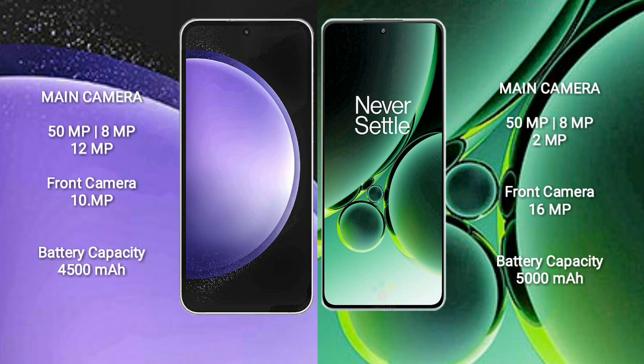OnePlus Nord 3 has a rear triple camera setup: 50MP, 8MP, and 2MP, with a front camera of 16MP.